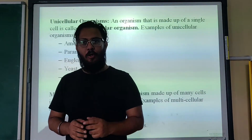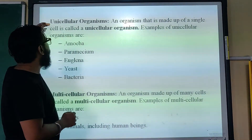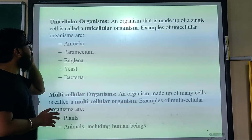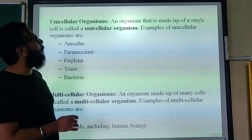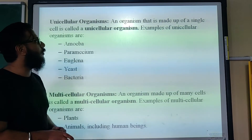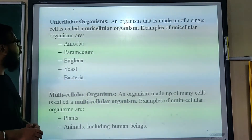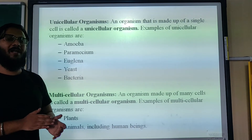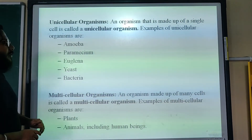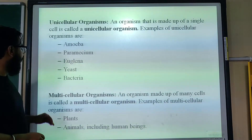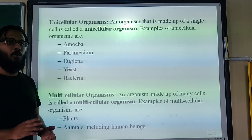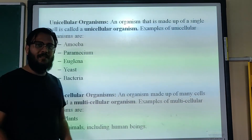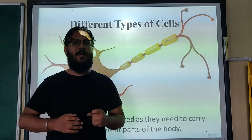If an organism is made out of one cell, it is known as a unicellular organism. 'Uni' means one, and 'cellular' means made out of cells. Examples are amoeba, paramecium, yeast, bacteria, and euglena. If an organism is made up of many cells — two or more — it is called a multicellular organism. Examples of multicellular organisms are plants and animals, including humans.